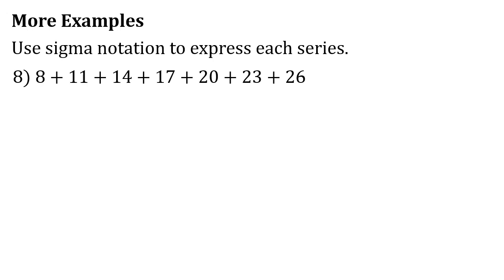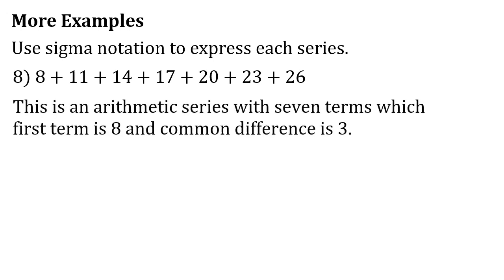For number 8: 8 plus 11 plus 14 plus 17 plus 20 plus 23 plus 26. The series is increasing by 3: 8+3=11, 11+3=14, 14+3=17, 17+3=20, 20+3=23, 23+3=26. This is an arithmetic series with 7 terms, first term a₁ = 8, and common difference d = 3.